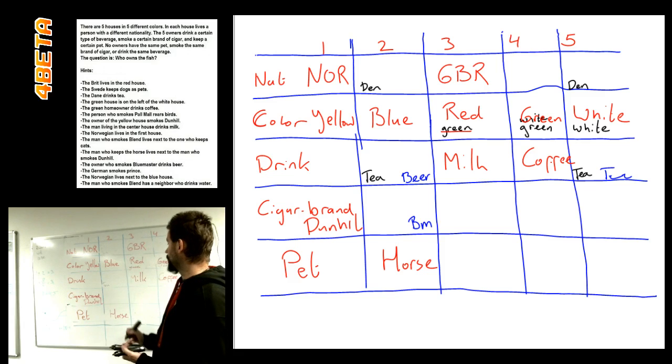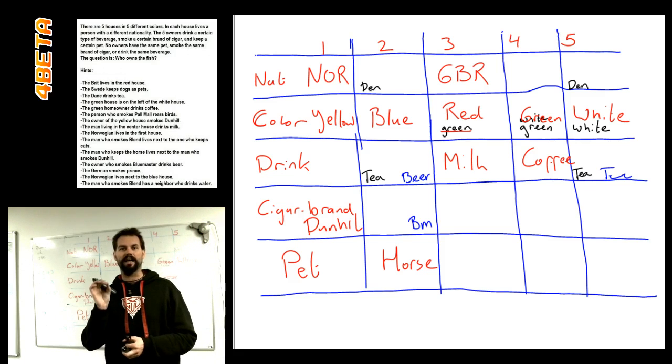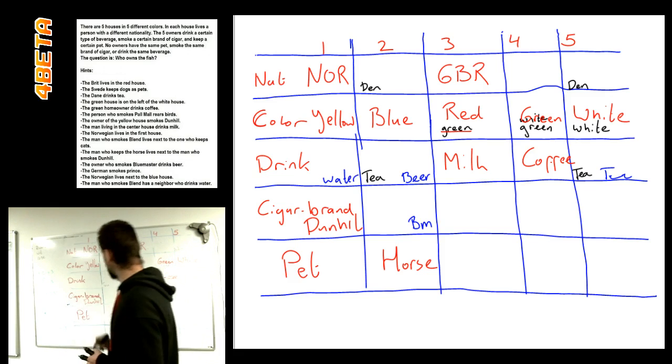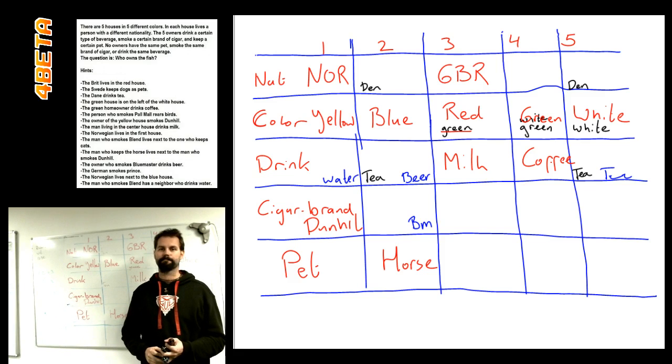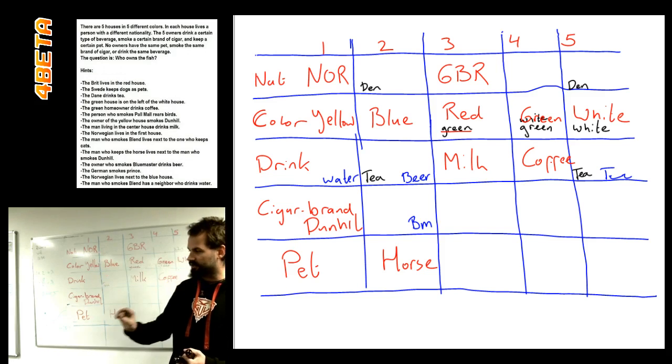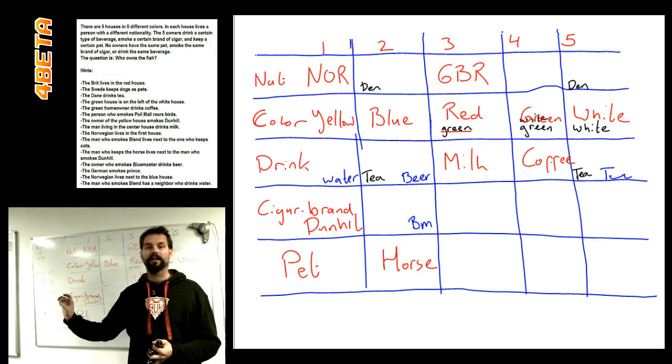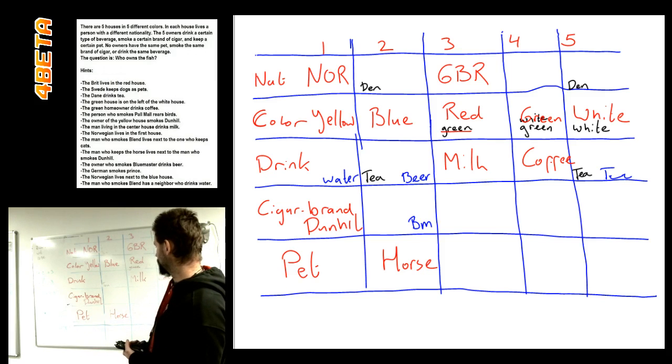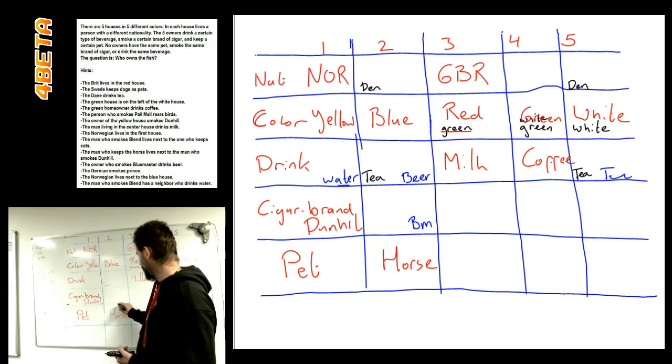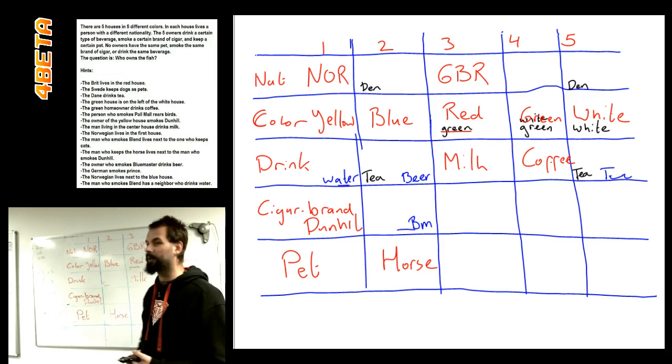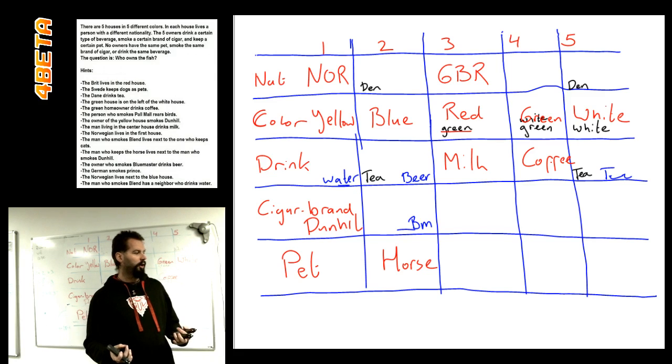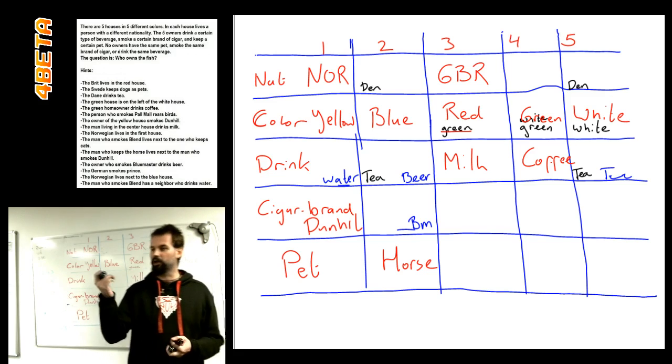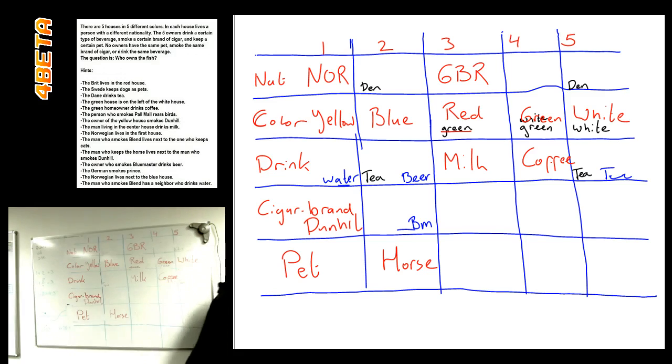But that directly means that in house number one, we have water. And when we look at rule number 15, the blend is supposed to be next to the water. But we have water and we have blue masters. So, when we have water and the blue masters, the blends don't fit. So, this option in blue doesn't work.